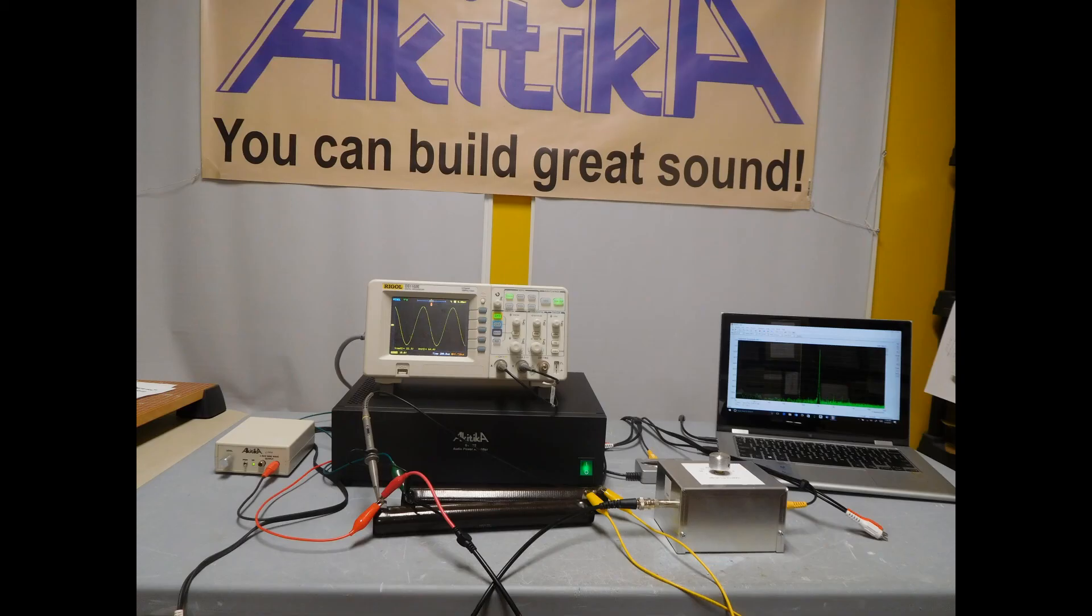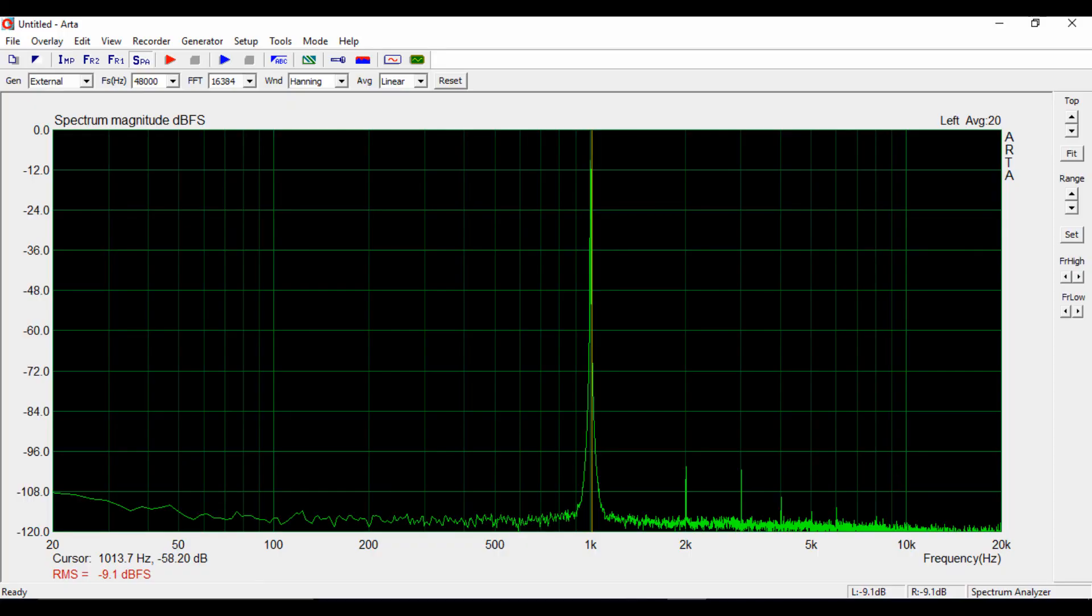The last thing we'll need is a PC running ARTA software. That's the software that turns a PC and a sound card into a spectrum analyzer. The spectrum analyzer will be used to display the signal and distortion products coming out of the power amplifier under test.